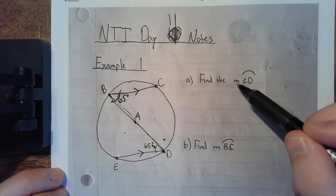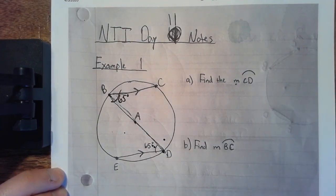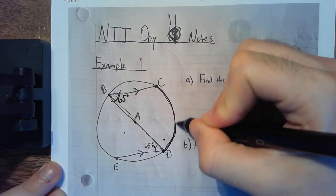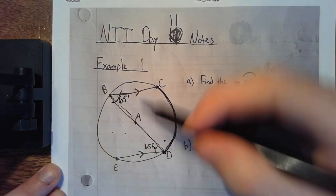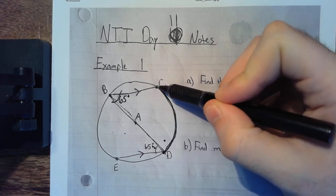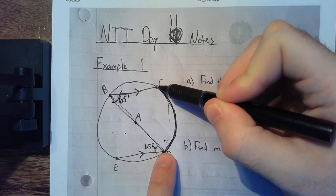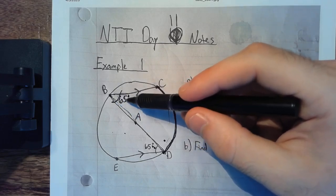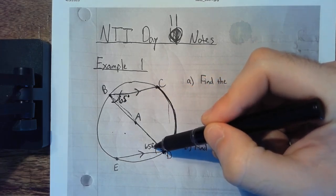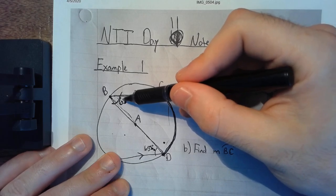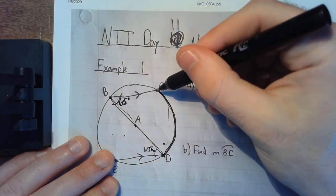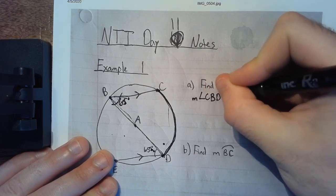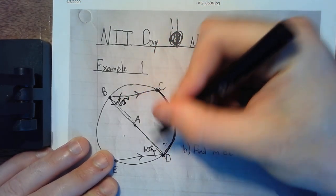The question in Example 1 asks: find the measure of arc CD. Arc CD is this piece right here. We need to find a relationship. The two endpoints of arc CD form an angle connecting at point B. We know that angle CBD is 65 degrees because it is the alternate interior angle to the given 65-degree angle. So the measure of angle CBD is 65 degrees.